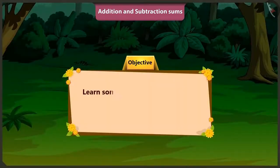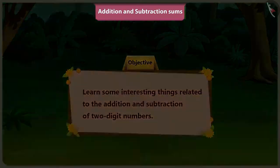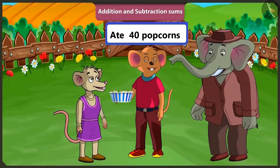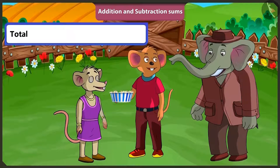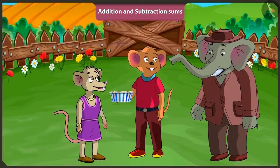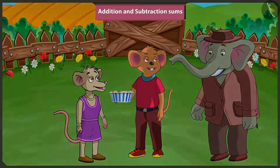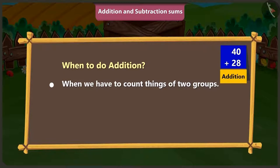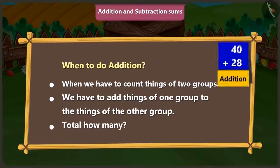So children, today we will learn some interesting things related to the addition and subtraction of two-digit numbers. Choo Choo, how many popcorns did you eat in one minute? I ate forty popcorns in one minute. And Chichi, you? I ate twenty-eight popcorns. If I ask: total how many popcorns did Choo Choo and Chichi eat, then to know that, we will have to do the addition of forty and twenty-eight. But how would we know that we have to do addition? When to do addition? Listen carefully. When we have to count things of two groups, or add things of one group to the things of another group, then we have to do addition. Or if you are asked 'total how many', then you have to do addition.